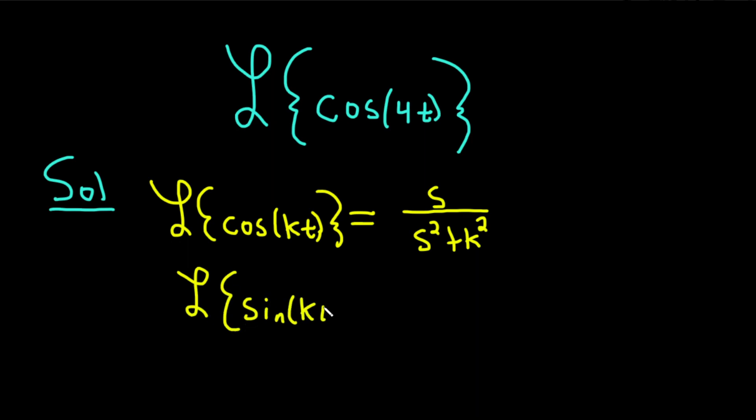of the sine of kt, that has the k. So it's backwards, right? You would think that sine would have the s, but no, it's cosine has the s. And that's how I memorize it, and then I know that sine has the k.